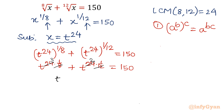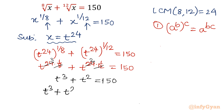So the equation will be t cubed plus t squared equal to 150. Or if we write all terms towards the left hand side, the equation will be t cubed plus t squared minus 150 equal to 0.